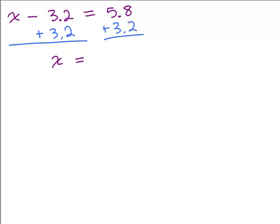So x is, and then we add over here. Remember I had to line up the decimal points. That's important when you're adding decimals. So this will be 9.0, and so that's our answer.